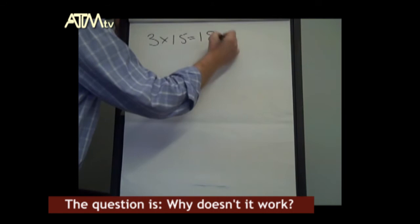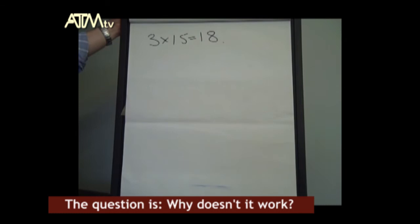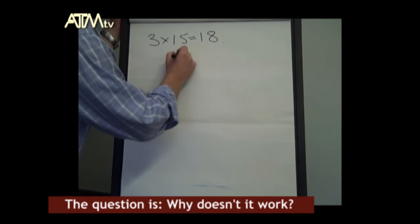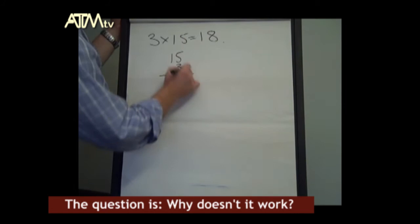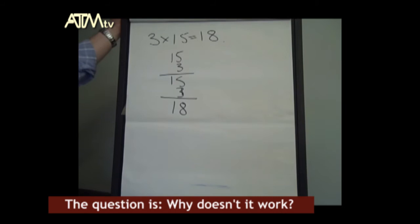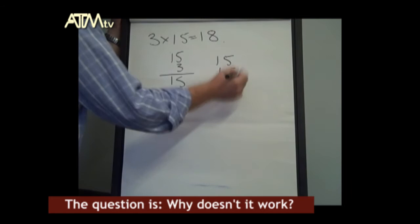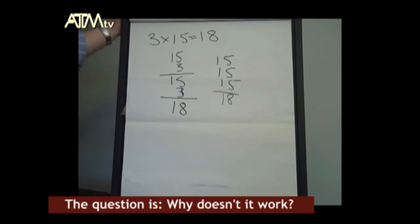Okay, there's another example of the kind of number or calculation we could use with this particular algorithm. Let's just check that that works. 15 multiplied by 3: 3 times 5 is 15, 3 times 1 is 3, giving us a total of 18. Or we could look at it like this: 15 added up 3 times—5 and 10 and 15, 16, 17, 18. Okay, that works.